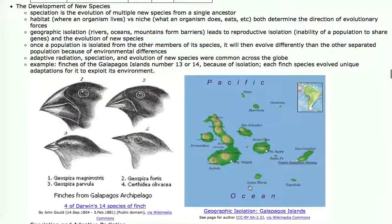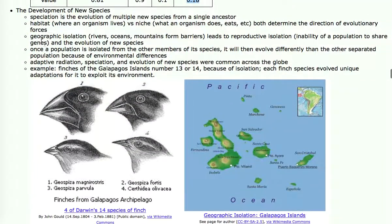How do new species evolve? We think it's because of geographic isolation most of the time. Speciation is the term used to describe the evolution of new species from a single ancestor, and it's based on habitat and niche. Habitat is where an organism lives, and niche is what the organism does. If an organism is geographically isolated by something—rivers, mountains, oceans, whatever—from the rest of its population, the environment will then cause it to evolve differently than the other populations that it's separated from.